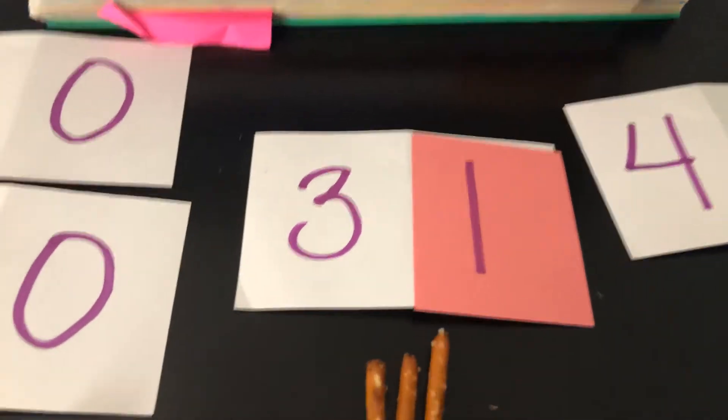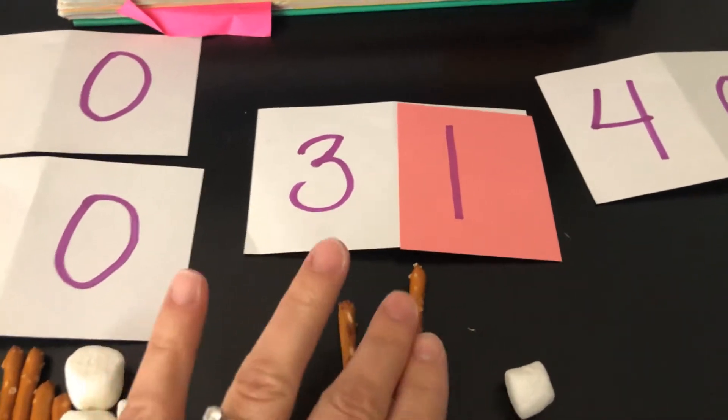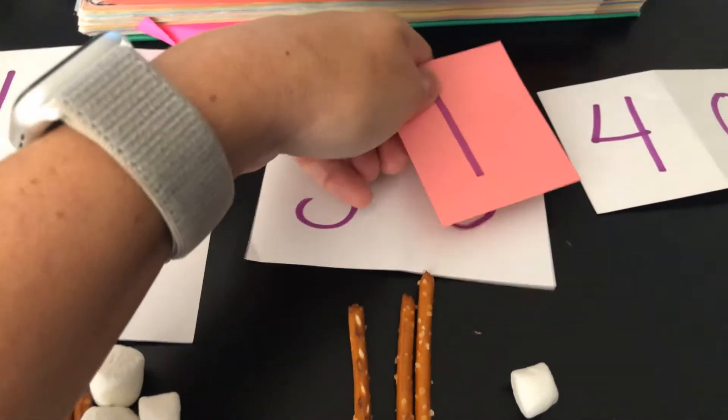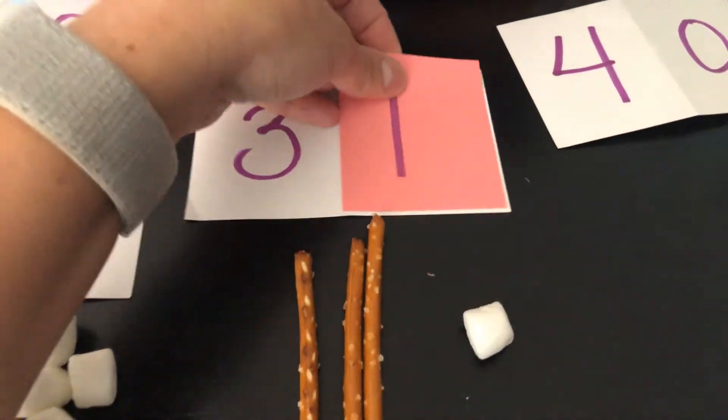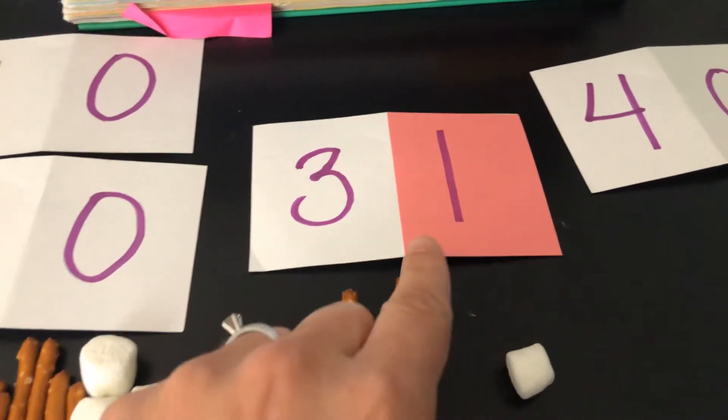So, if I want to show the number 31, I have 10, 20, 30, and that's where I get my decade number 30 from. And then I have 1 marshmallow, 31. Or you could say, I have 3 tens and 1 one.